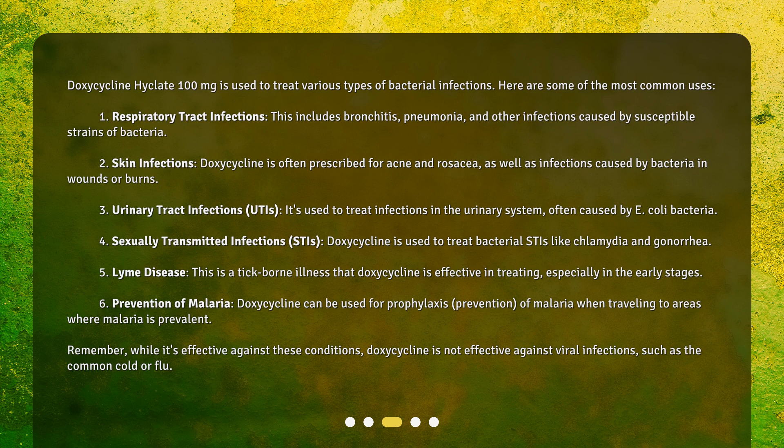Urinary Tract Infections (UTIs): It's used to treat infections in the urinary system, often caused by E. coli bacteria. Sexually Transmitted Infections: Doxycycline is used to treat bacterial STIs like chlamydia and gonorrhea.